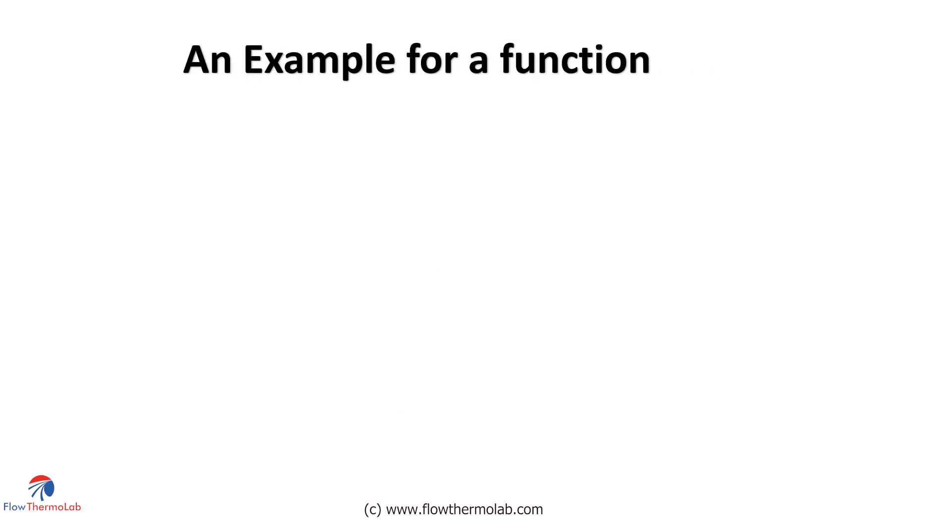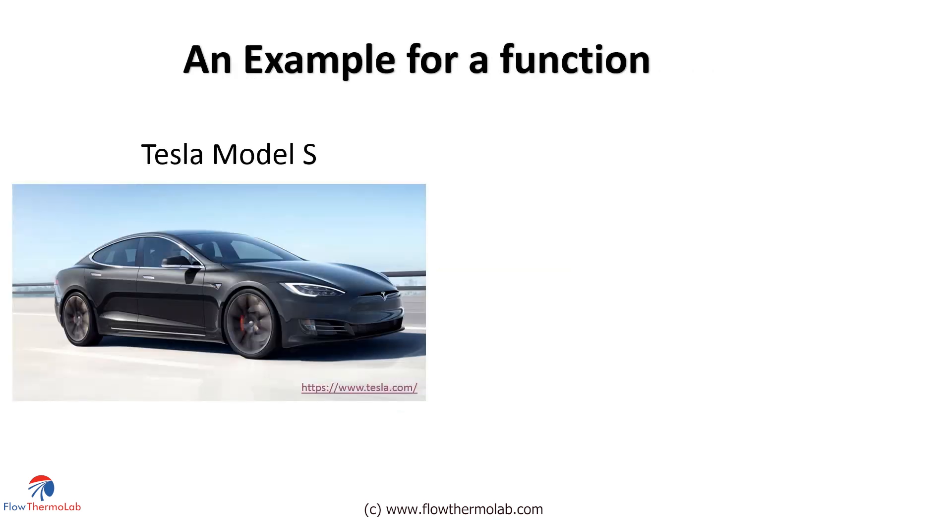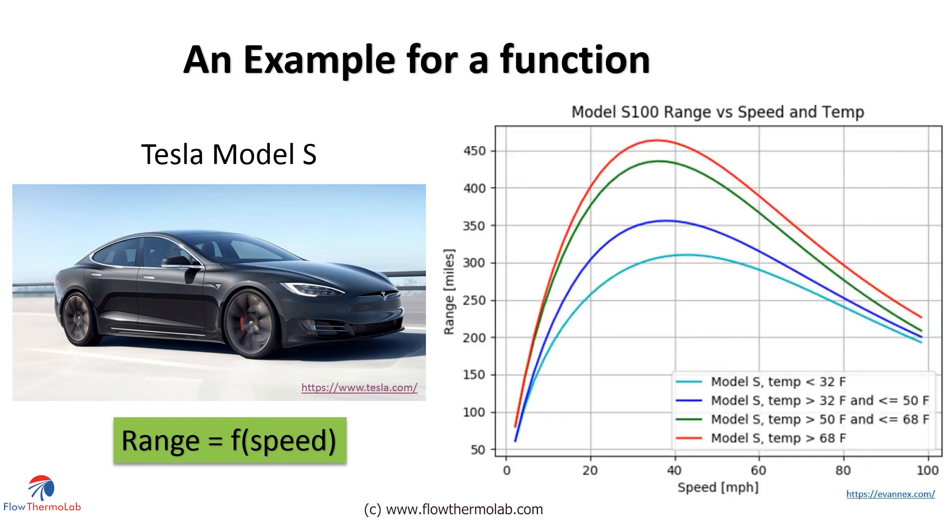An example for a function is, let's take an electric vehicle, say the Tesla Model S. One function which is of interest to us is its range. That is how long it can run with one charging. But the range is a function of speed. Here is the plot, which shows that for lower and higher speeds, the range can drop. And there exists an optimal speed of the vehicle to get the maximum range possible. Well, this is just a simple example of a function which you can just see as a plot or a graph.